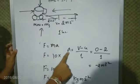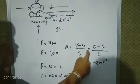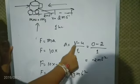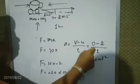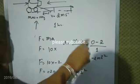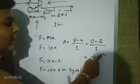Force equals mass times acceleration. Acceleration equals V minus U divided by time. That equals 0 minus 2 divided by 1, which gives us minus 2 m per second squared.